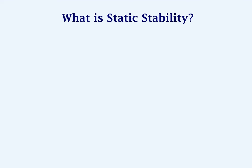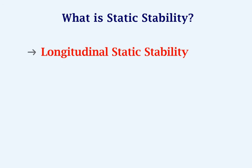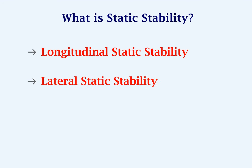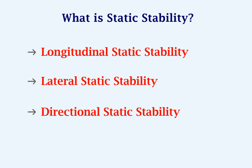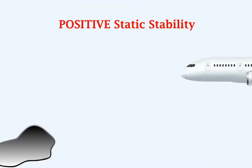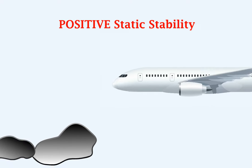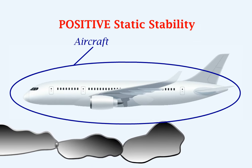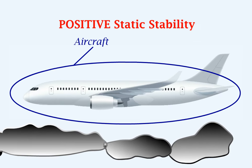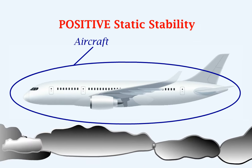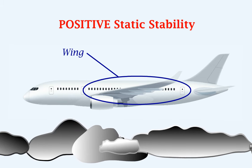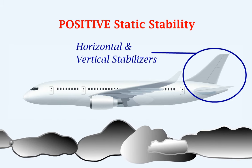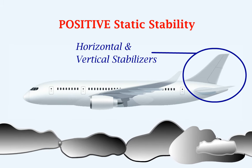The static stability of an aircraft includes longitudinal static stability, lateral static stability, and directional static stability. Positive static stability is achieved by a good aircraft design — more specifically, a good design of the wing and the horizontal and vertical stabilizers.